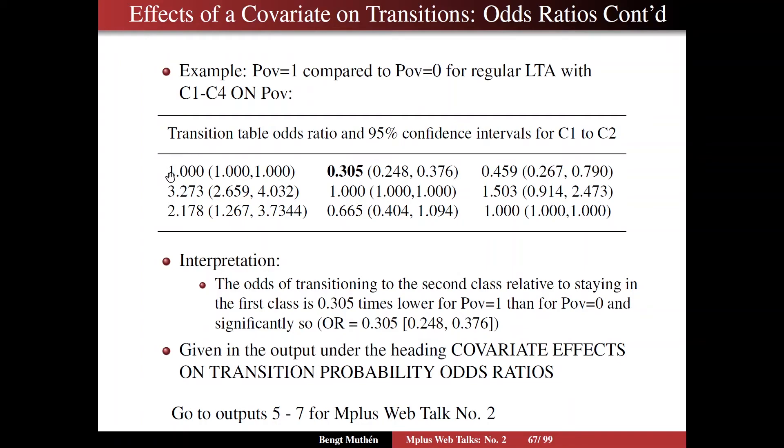So now we're going to take a look at the odds ratio, and you notice then the feature of ones on the diagonal. So we're abandoning the M-plus default, and automatically M-plus does this reparameterization. And we can consider, for instance, this odds ratio and its 95% confidence interval, which does not include 1, so it's a significant odds ratio, 0.305. And the interpretation is, the odds of transitioning to the second class, this class, relative to staying in the first class, is 0.305 times lower, the odds is 0.305 times lower for poverty equals 1, then for poverty equals 0, and significantly so. So the odds ratio is 0.305. And here is the confidence interval taken from up here.